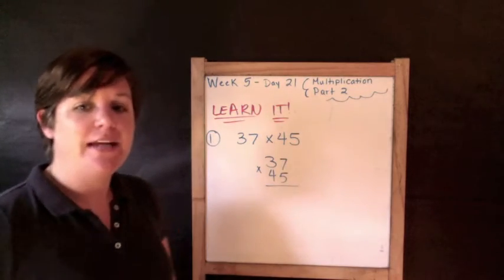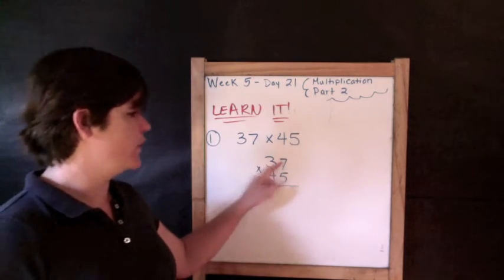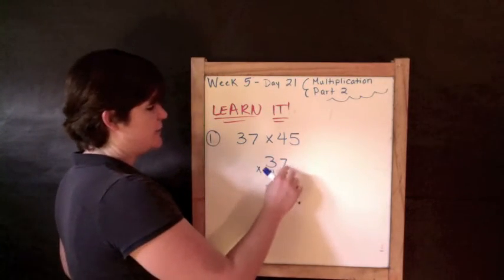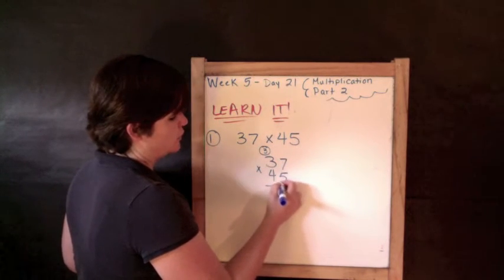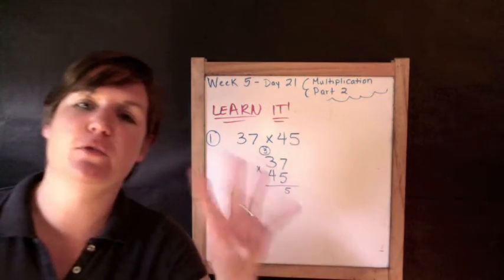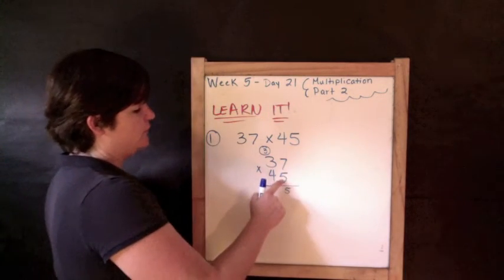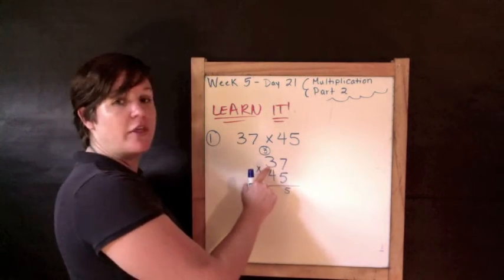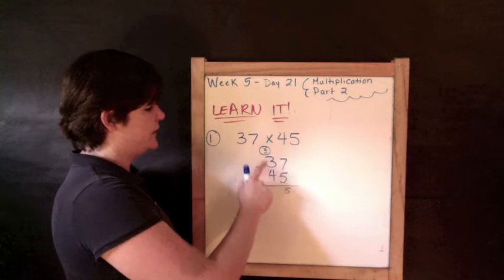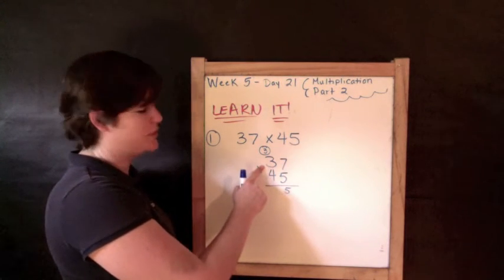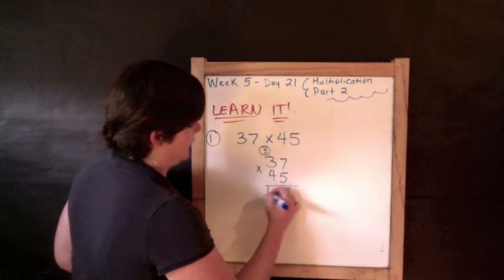Step 1: multiply the 1's place of the bottom number, which is 5, times the 1's place of the top number. So 5 times 7 is 35. You need to regroup and circle it, just like we did in the 4 digits times 1 digit video. Now we do 5 times 3, which is 15, and 15 plus 3 is 18.